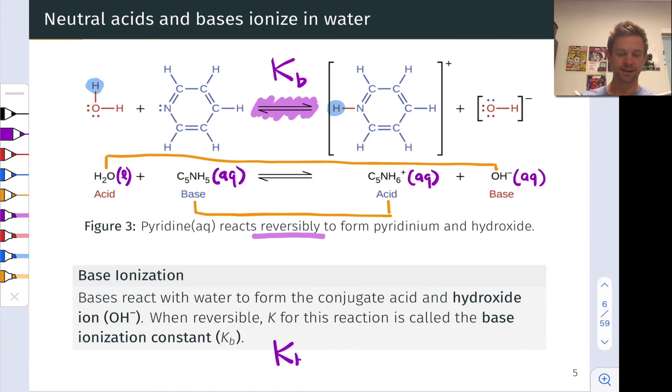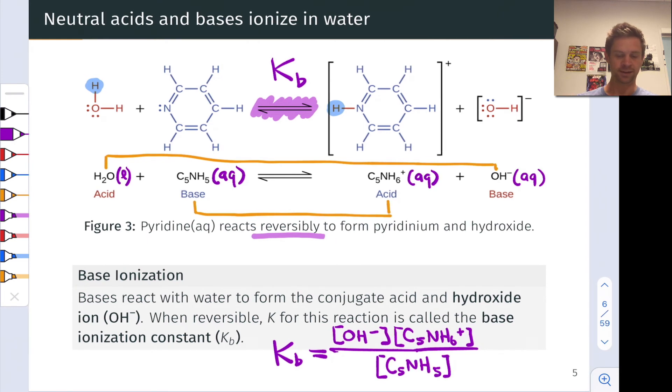And so we can write the form of KB using ideas about reaction quotients we've seen previously with products in the numerator and reactants in the denominator, writing OH-, let's put that first. The order doesn't matter, of course, but let's go ahead and put that first. And then the conjugate acid on the product side here, C5NH6+, is our other product and also appears in the numerator. And in the denominator, we omit water for the exact same reason we did in the acid ionization case and just write the concentration of the base, C5NH5 here.